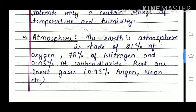The atmosphere is a very crucial part, as we all live in the atmosphere. The Earth's atmosphere is made up of 21% oxygen, 78% nitrogen, and 0.03% carbon dioxide. The rest are inert gases, which are also important.